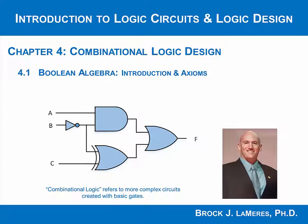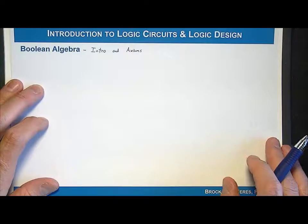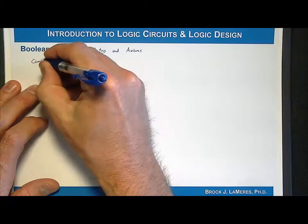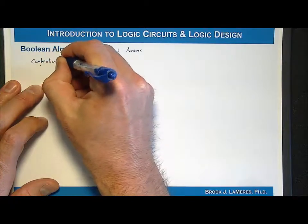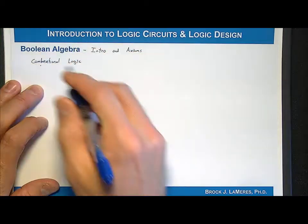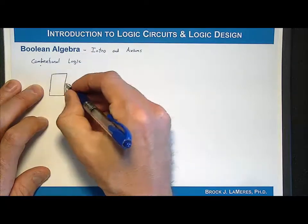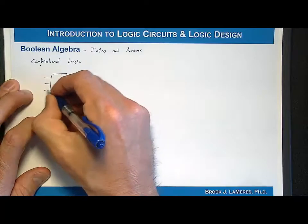The first step in designing what we call combinational logic circuits is to understand the legal operations and manipulations that we can do on logic expressions in order to create the ultimate circuit. To begin with, let's take a look at what a combinational logic circuit is, and then we'll move into some of the basic definitions for the algebraic system we're going to use.